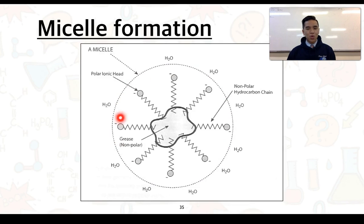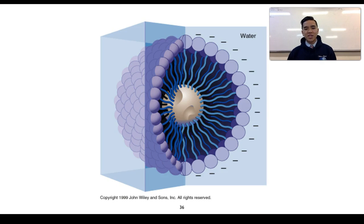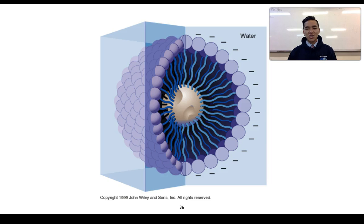This entire structure is called a micelle. It has a three-dimensional structure with all the negatively charged ionic heads around the outside and the non-polar hydrocarbon tails pointing inside, forming strong interactions with the non-polar grease. Water interacts with the negative charges on the outside, and these negative charges keep the micelles in solution, stopping them from settling and precipitating out onto surfaces. This is how soaps and detergents remove non-polar stains. That concludes our work on 4.1.